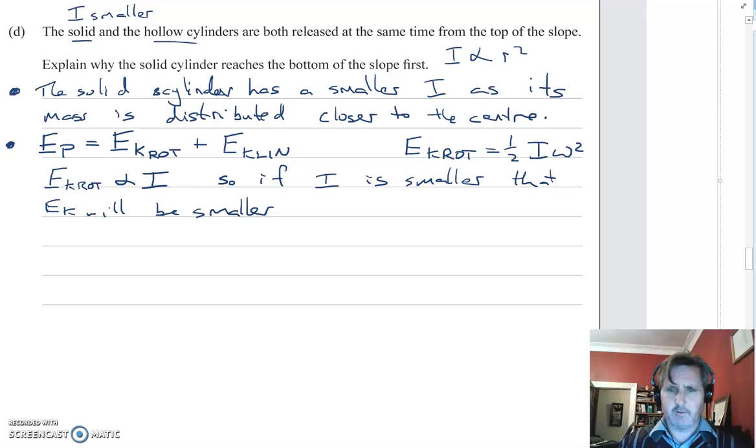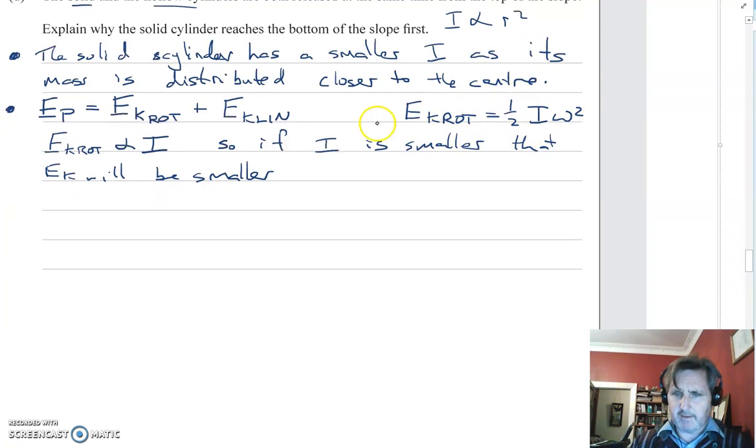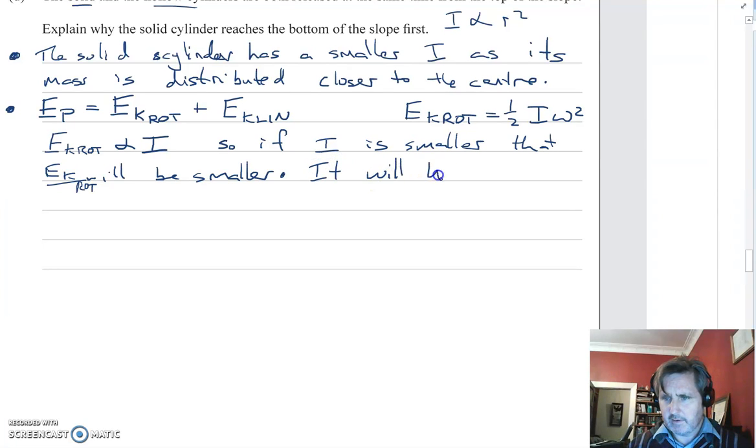So if I is smaller, then EK rotational will be smaller. Since our inertia was smaller, our kinetic energy was smaller. That means that this solid cylinder has a smaller EK rotational. Therefore it will have a larger EK linear. It's because EK rotational plus EK linear equal the potential energy at the start. If the rotational kinetic energy is less, then the linear kinetic energy must be larger.